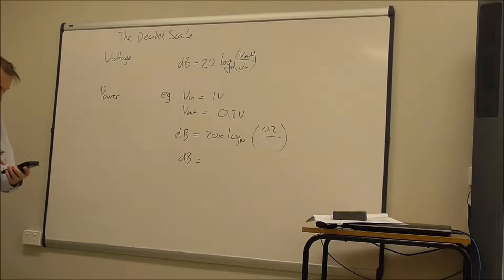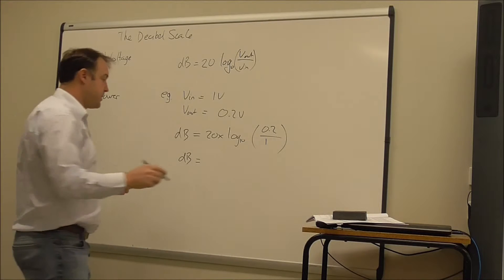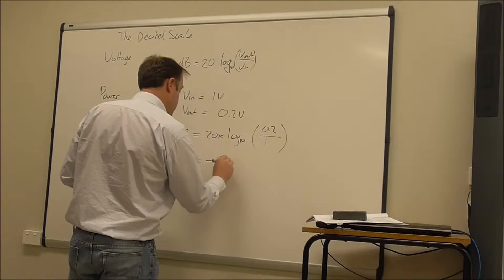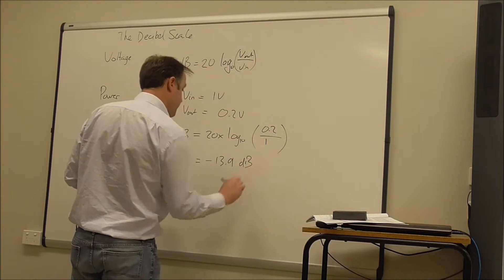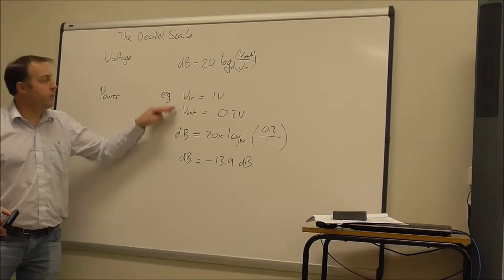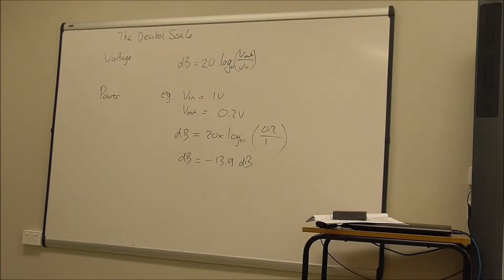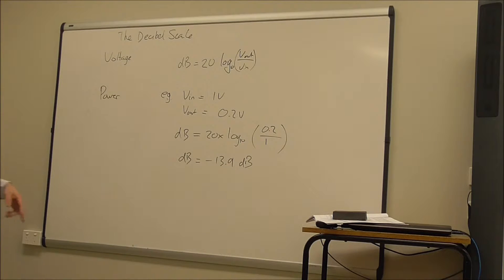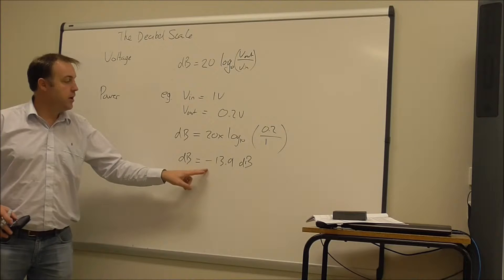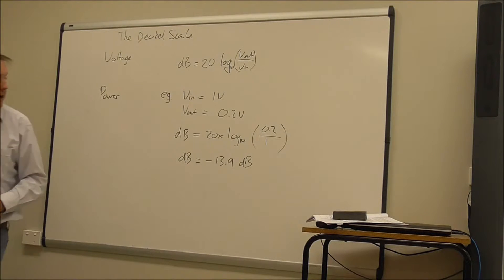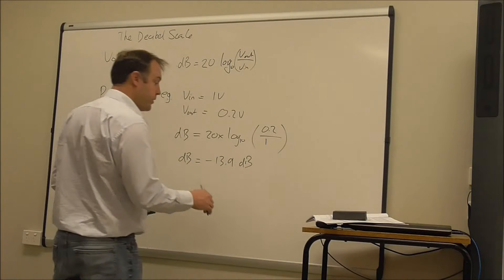So if I go 20 log 0.2. So if I had a filter with one volt on the input, and at some frequency had 0.2 volts on the output, then at that frequency, the filter has a minus 13.9 decibel, close to minus 14.